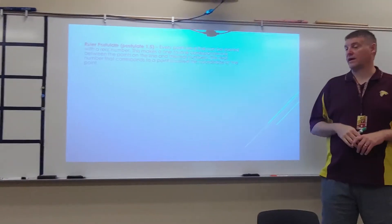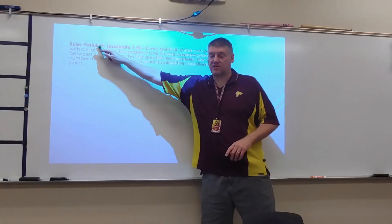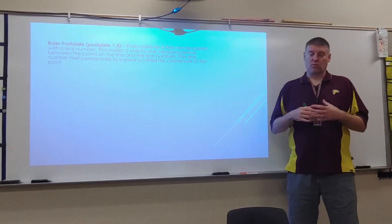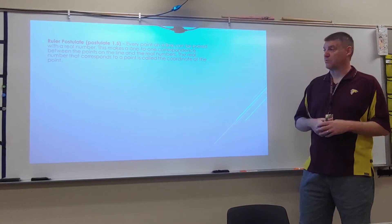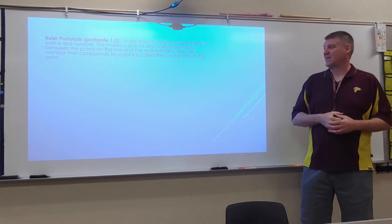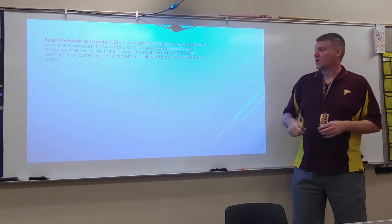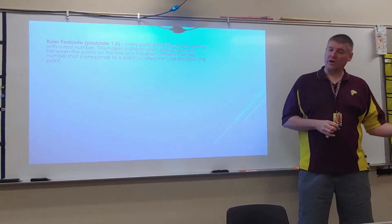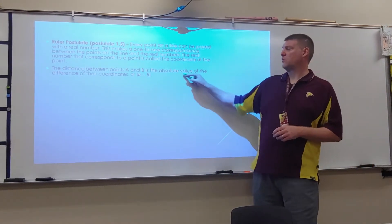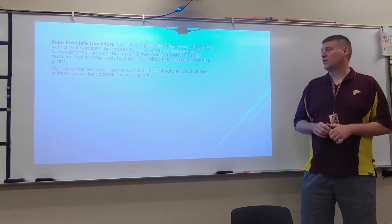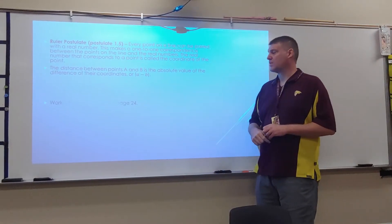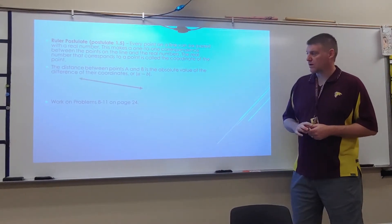Ruler postulate, or 1.5. A lot of books, you're going to see this written as the ruler postulate. Every point on a line can be paired with a real number, kind of like that number line. Most of you guys are really familiar with a number line. This makes a one-to-one correspondence between points on the line and the real numbers. The real number that corresponds to the point is called the coordinate of the point. We kind of create that number line.